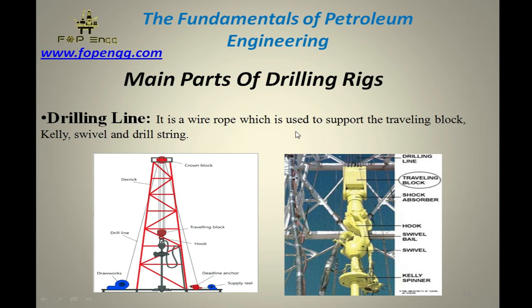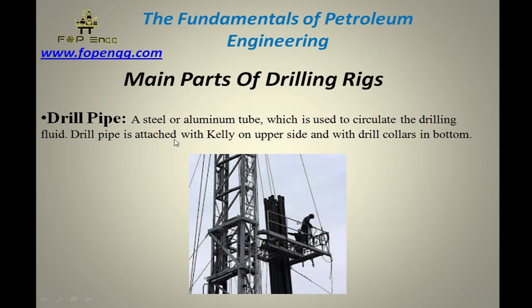Drilling line — the drilling line is basically known as the wire rope, which is used to support the traveling block, kelly, swivel, and drill string. In this diagram you can see the draw works, which I mentioned in the previous slide, and the drilling line. It is used to support the traveling block, kelly hook, and swivel.